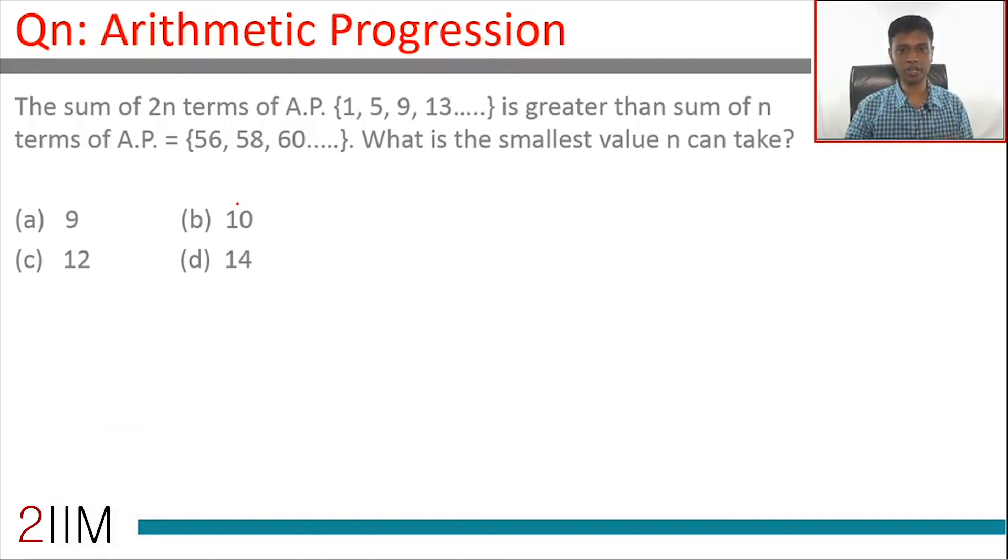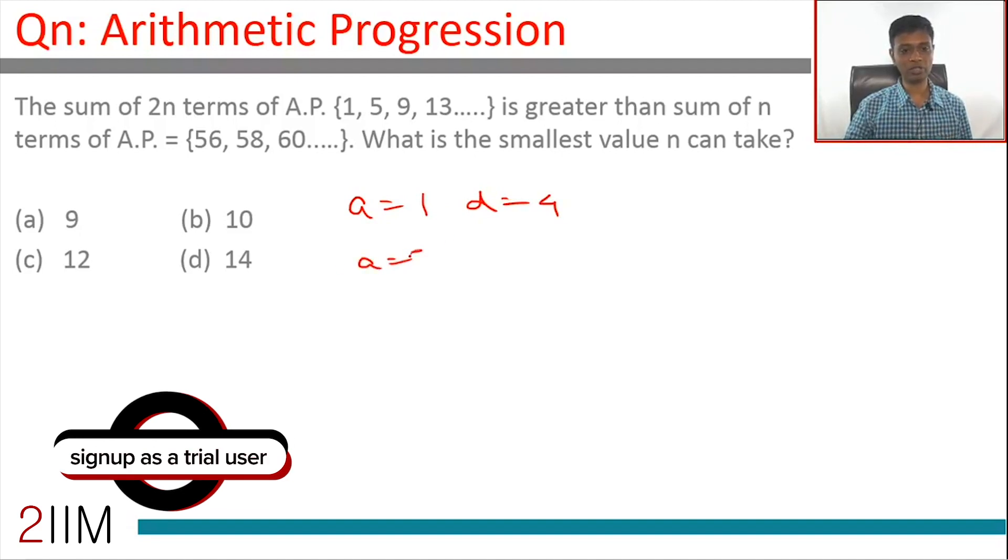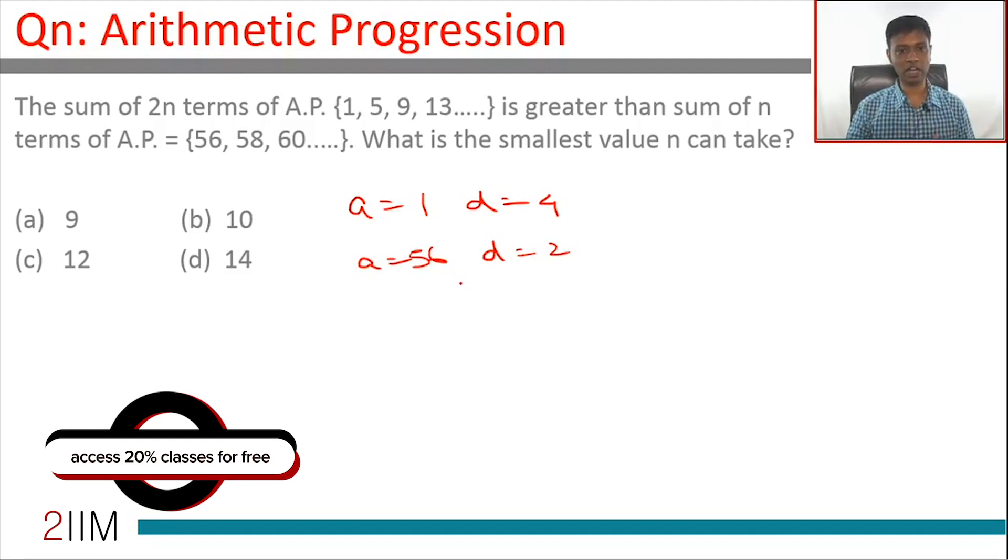Should know sum up to n terms of an AP, plug that formula in, we are through. The first sequence AP with the first term 1, common difference 4. Second sequence AP with first term 56 and common difference 2. We see the first term grows quicker because the common difference is larger. Second term starts off at a higher point. We need to find the smallest value n can take.